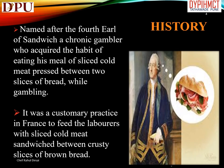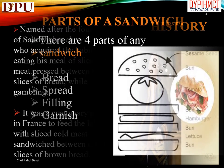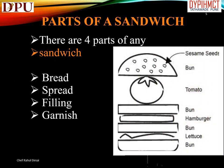It was also a customary practice in France to feed laborers with sliced cold meat sandwiched between crusty slices of brown bread. There are four parts of a sandwich: bread, spread, filling, and garnish.